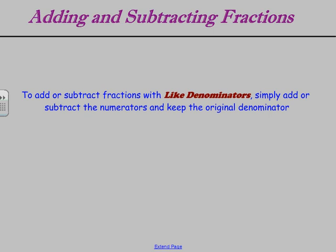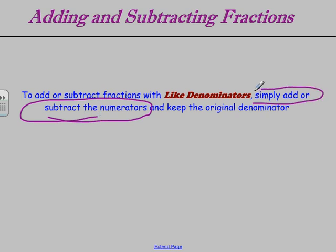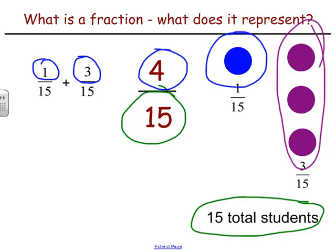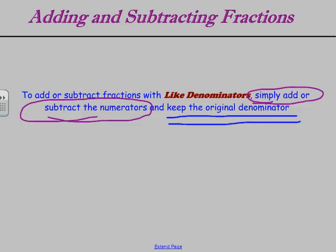That tells us the two important facts we need about adding or subtracting fractions with like denominators: to add or subtract fractions with like denominators, simply add or subtract the numerators, and keep the original denominator. We don't add or subtract the denominators themselves, because as we saw in this example with the students, the total number of students doesn't change. And generally, that's going to be true no matter what two fractions you add or subtract with like denominators.